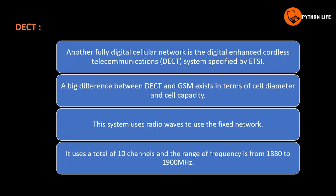DECT is another fully digital cellular network - the Digital Enhanced Cordless Telecommunication System, specified by ETSI, the European Telecommunication Standards Institution. DECT differs from GSM in terms of cell diameter and cell capacity range. It uses radio waves for data transmission and fixed network connectivity. You have 10 channels and can use frequencies from 1880 to 1900 MHz.